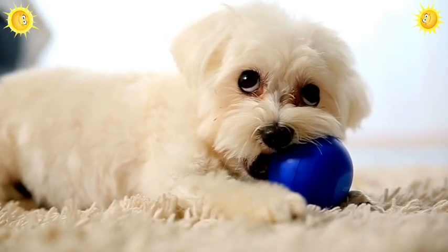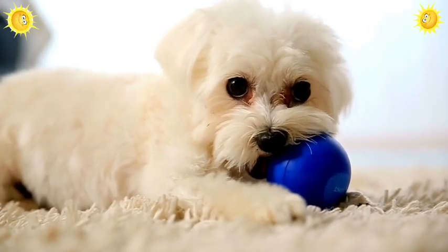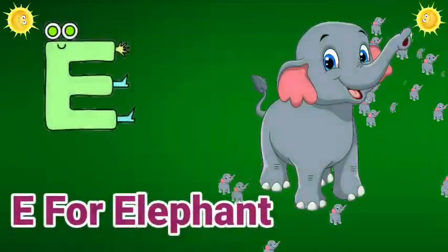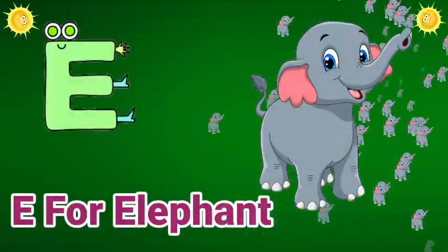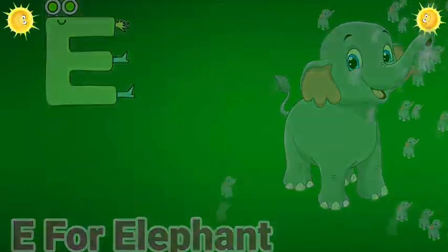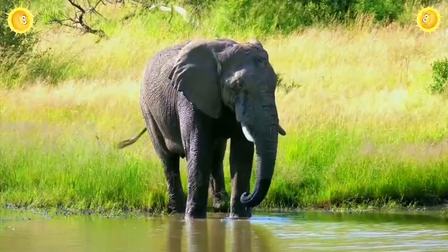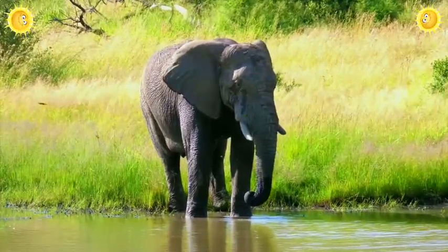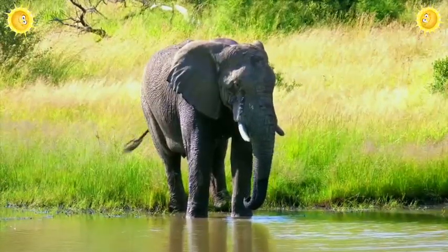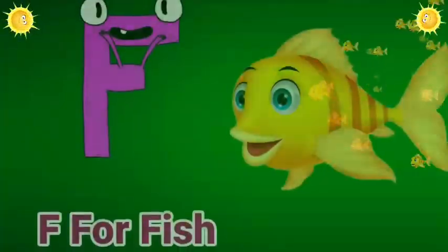D for dog. Dog means kutta. E for elephant. Elephant means hathi.